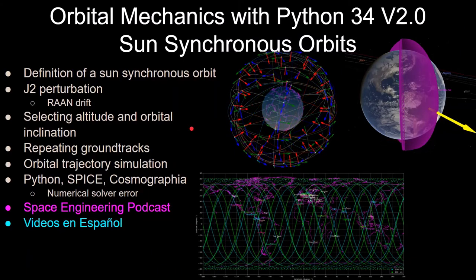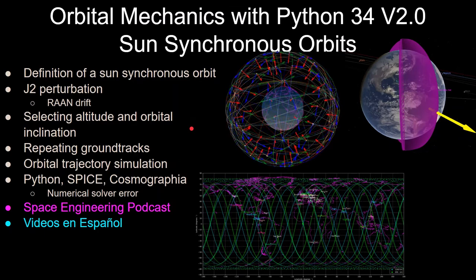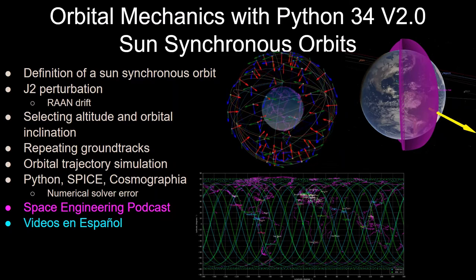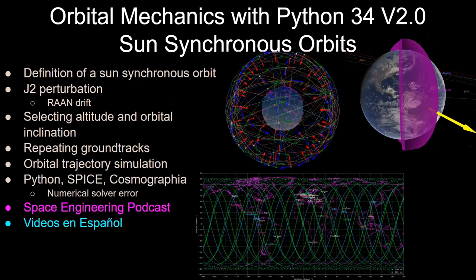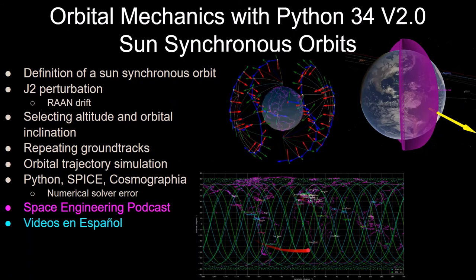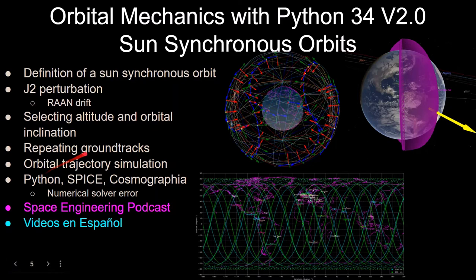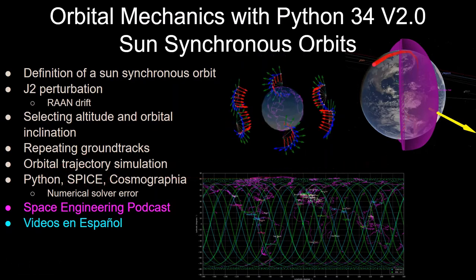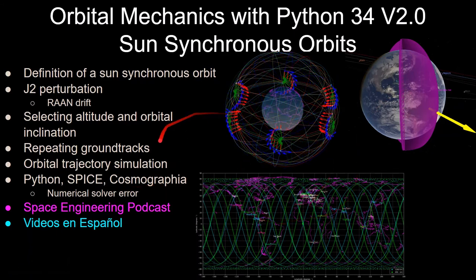So this is the 34th video in the series, and the second time I'm making this sun-synchronous orbits video. And this one will be going over the definition of a sun-synchronous orbit, the J2 perturbation and how you can model the drift in the right ascension, how to select altitude and orbital inclination for sun-synchronous orbits, repeating ground tracks as is shown here on the bottom, orbital trajectory simulation, so how to actually plug this into software, and then going into the Python,